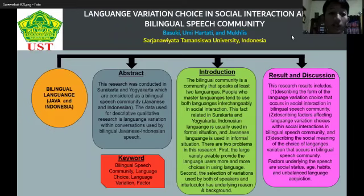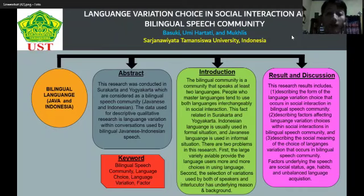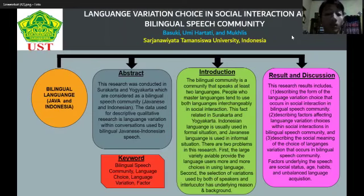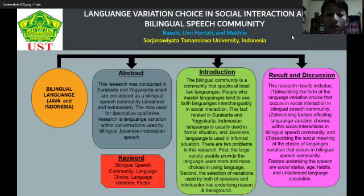This research was conducted in Surakarta and Yogyakarta, which are considered a bilingual speech community — Javanese and Indonesian. The researchers believed that people in Surakarta and Yogyakarta have mastered two languages, making them bilinguals. In this case, the two languages are Javanese and Indonesian. The data used for this descriptive qualitative research is language variation within conversations used by bilingual Javanese and Indonesian speech communities.